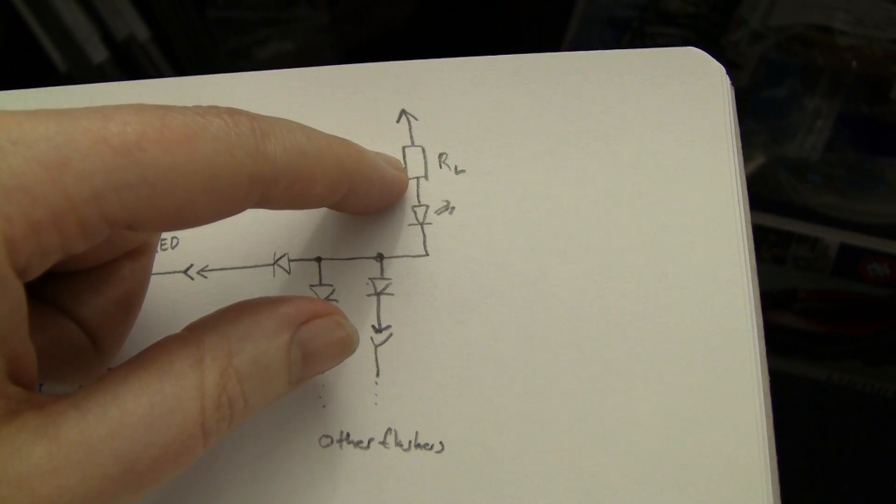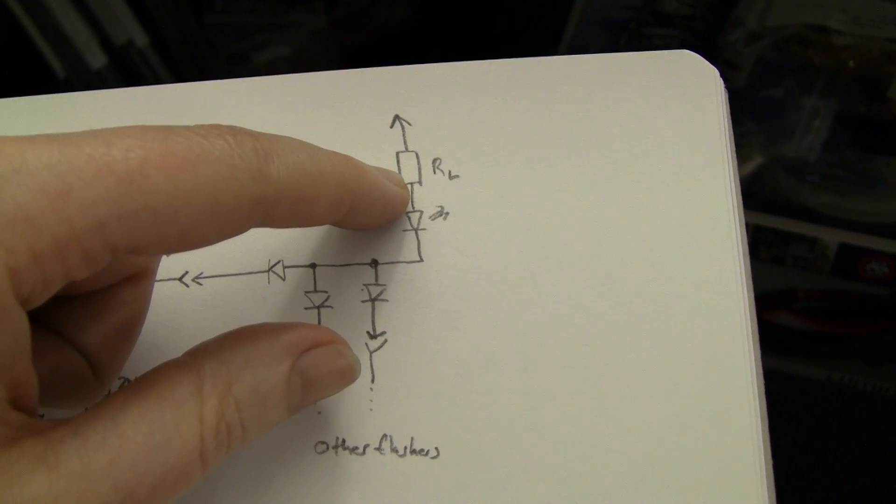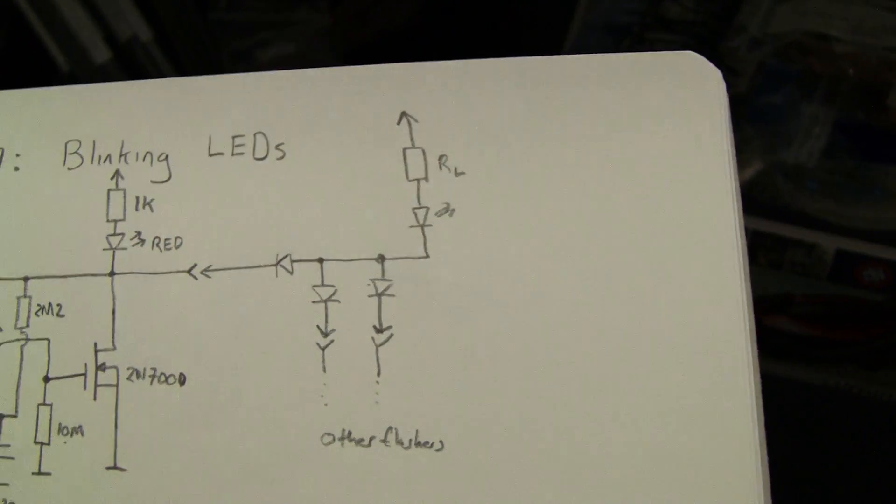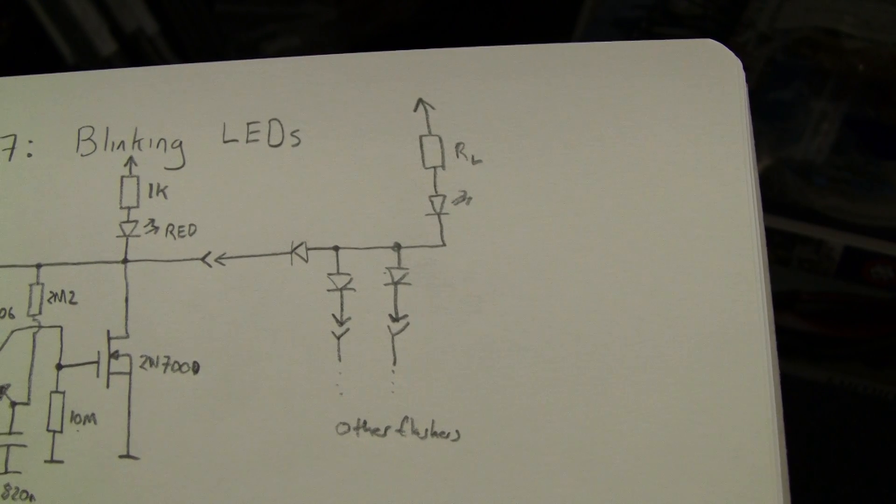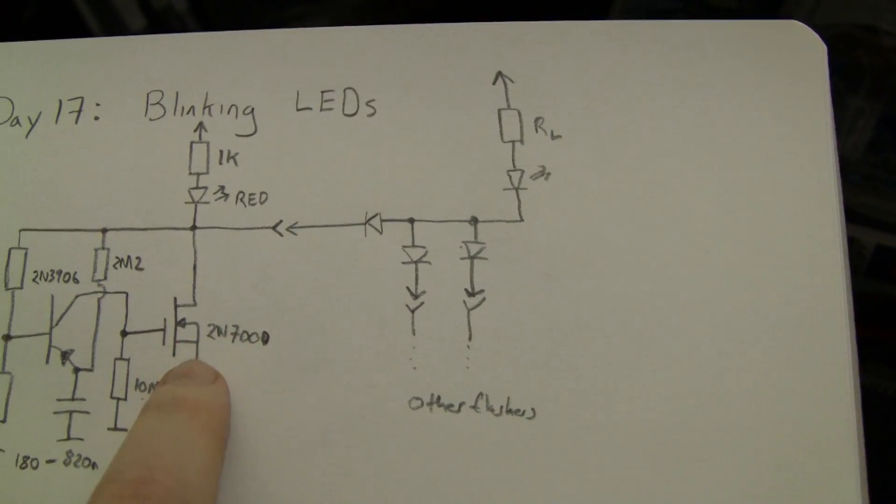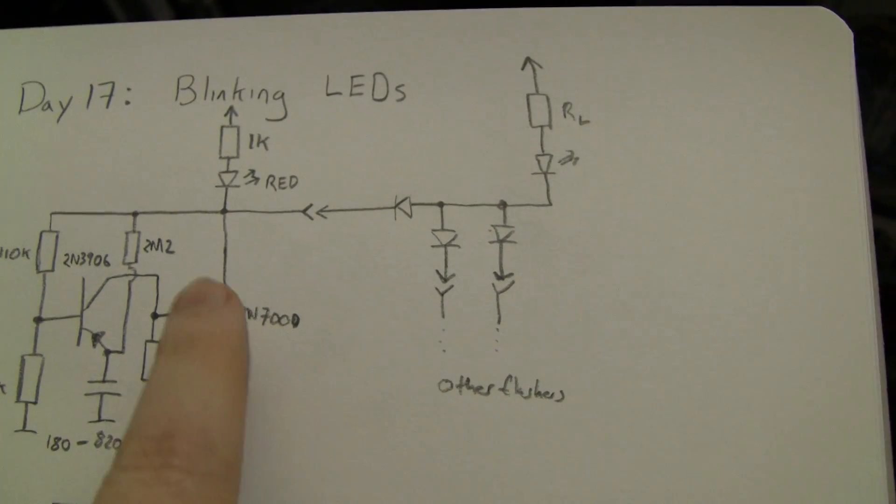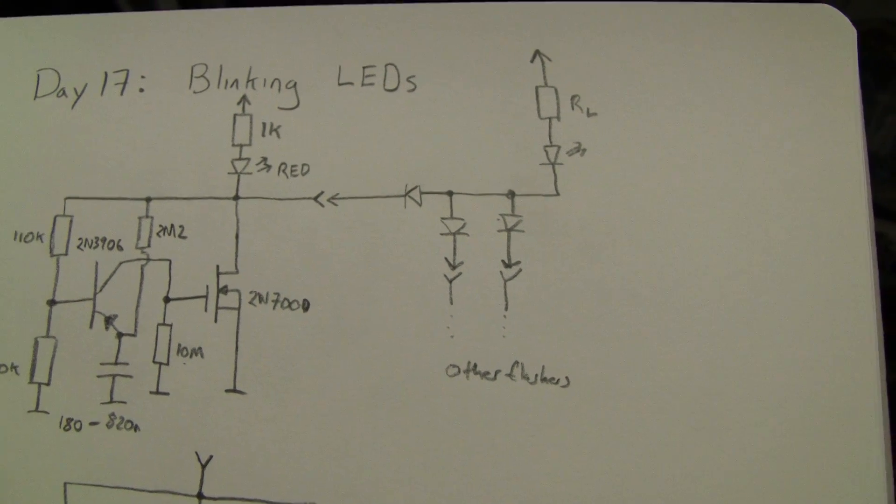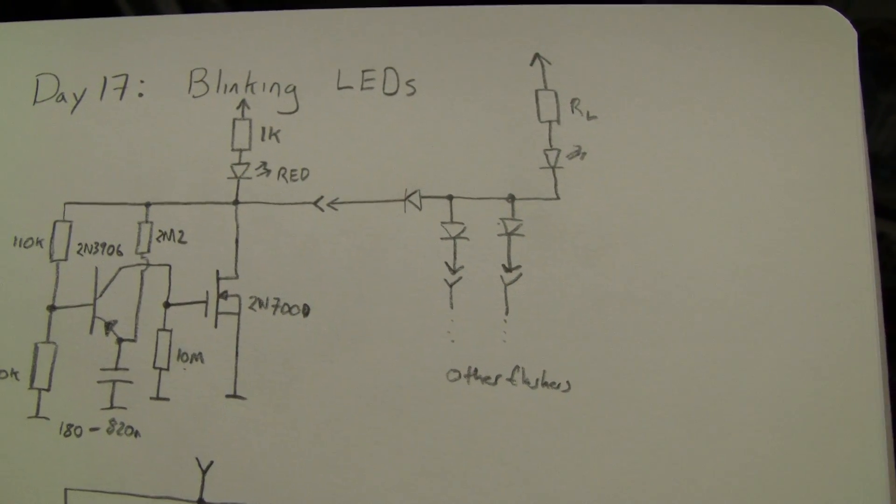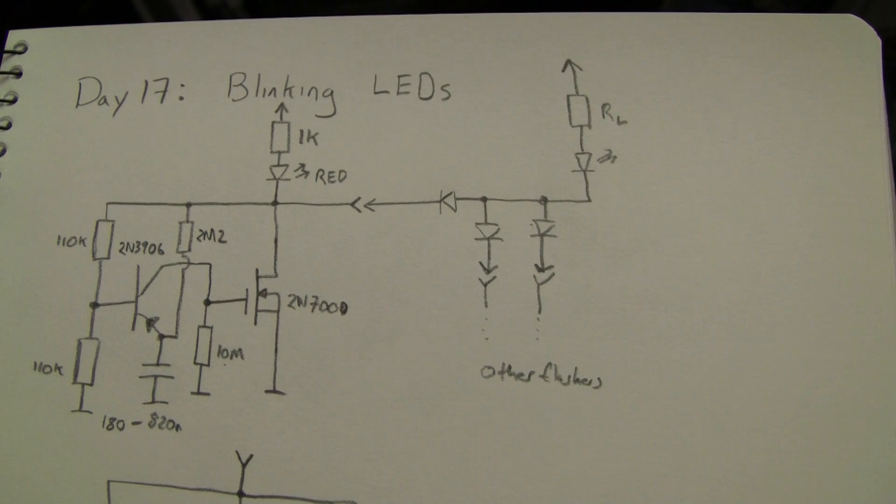Then aim for 20 milliamps and use Ohm's law V equals IR to calculate the resistor that you need and away you go but as long as you don't blow up the transistors and again the transistors are taking pulses as well so a lot of MOSFETs have bigger pulse current ratings than they do continuous data sheet is your friend as always.